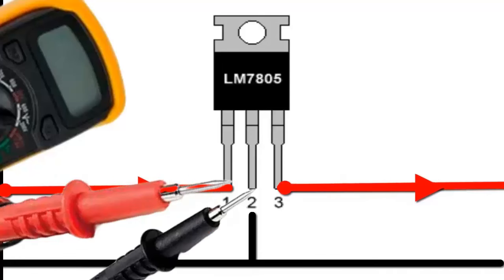Place the negative, black probe on pin 2, ground.